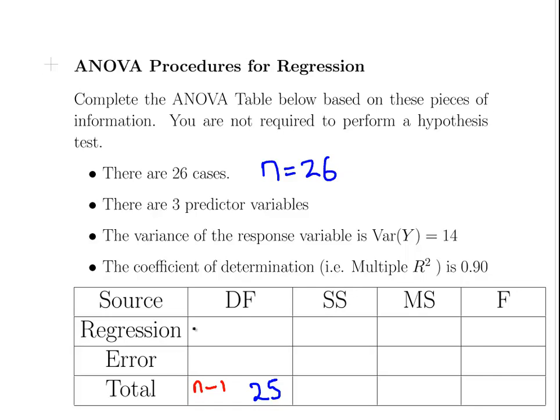The other degrees of freedom are P as number of predictor variables, and N minus P minus 1. The number of predictor variables is 3, so they have to add up to 25: 3 and 22. N minus P minus 1 is 26 minus 3 minus 1, which is 22, so that checks out.